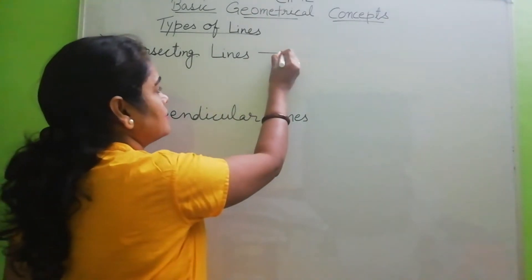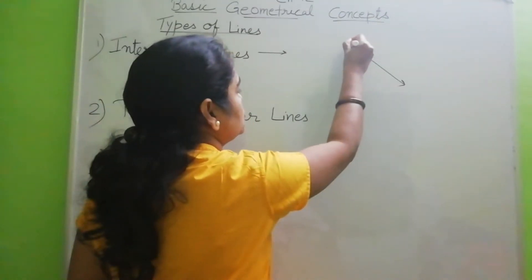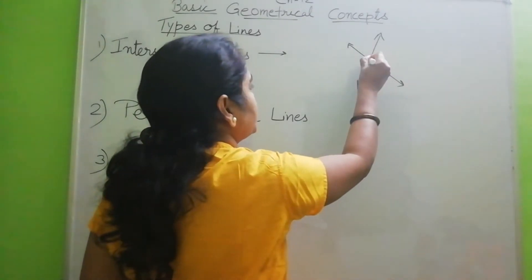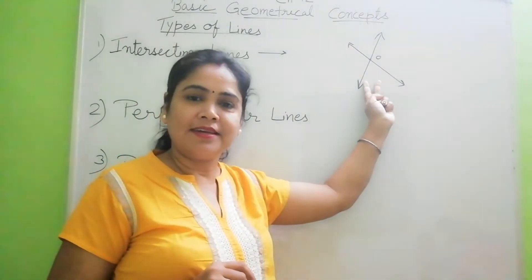In intersecting lines, we say that two lines, any two lines which meet each other at a point, the two lines are called intersecting line.